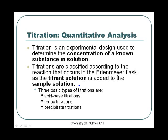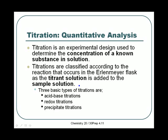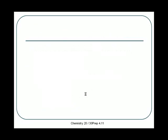Titrations are classified according to the reactions that occur in the Erlenmeyer flask. There's a titrant solution added to a sample solution, and the types of titrations are acid-base titrations, redox titrations, and precipitate titrations, named based on what's being reacted. We aren't going to talk about redox or precipitate titrations in chemistry 30 prep — the only ones we have to worry about are acid-base titrations.